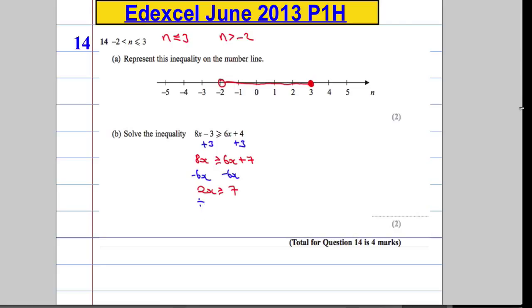Dividing both sides by 2, we get x must be greater than or equal to 7 over 2. If you really want to, you could simplify it to x is greater than or equal to 3.5, but you get marks for either form - don't worry about that.